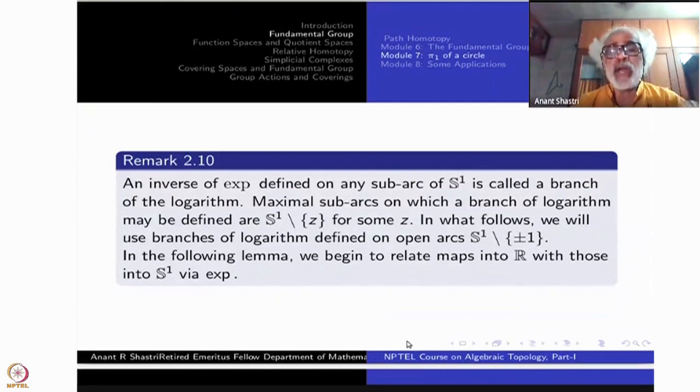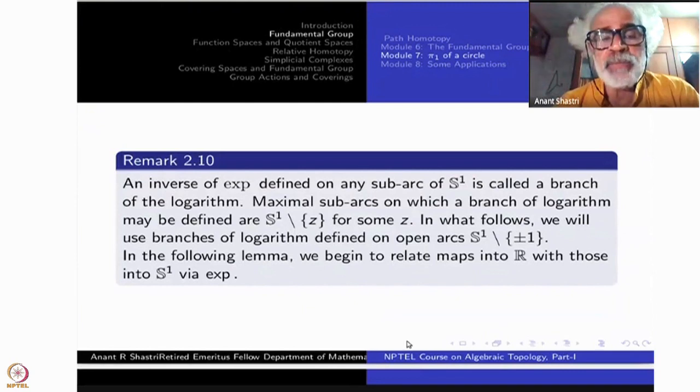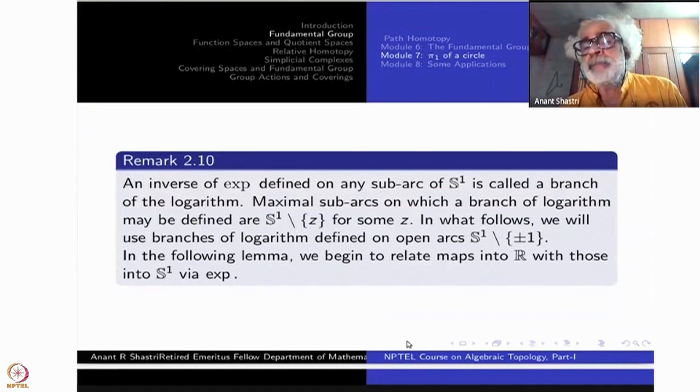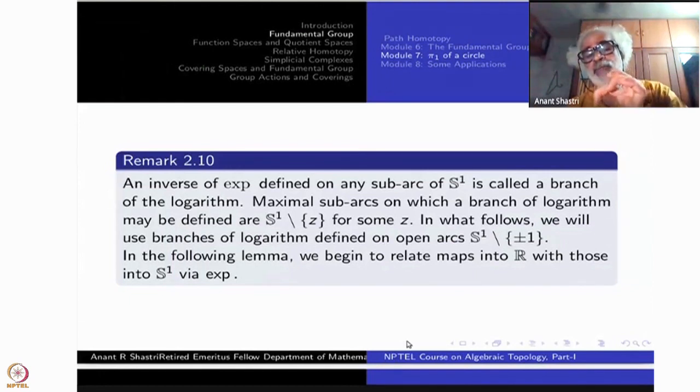An inverse of exponential defined on any sub-arc of S¹ - any sub-arc means at least one point should be missing. Then you take any subset of that which is connected, that is a sub-arc. It is called a branch of the logarithm, if you want to use these terminologies. Maximal sub-arc on which a branch of logarithm is defined may be defined are S¹ minus Z. As soon as you include the full thing it is not defined. If you throw one point it is defined. In what follows we will use branches of logarithm defined on open arcs.